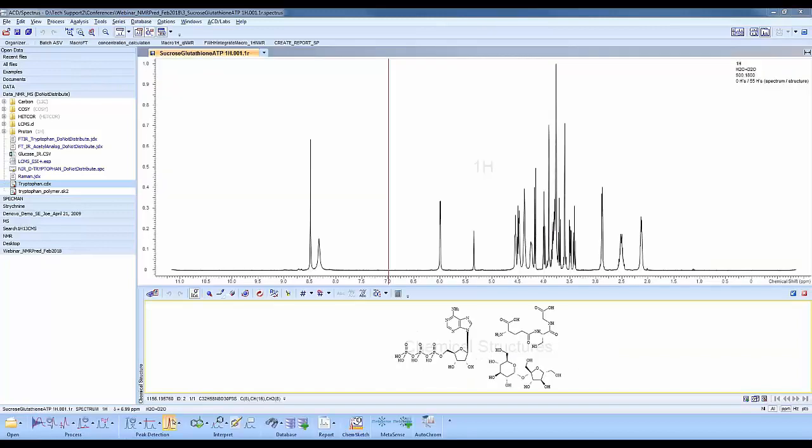And so we have a mixture. We have a proton NMR of a mixture of three components: ATP, glutathione, and sucrose at different ratios. And what we can do is predict a proton NMR and compare them.